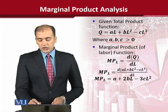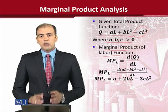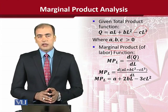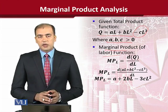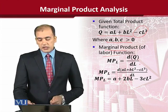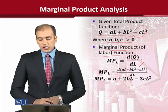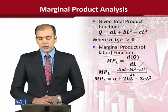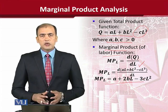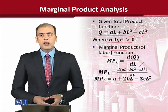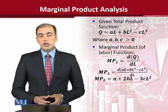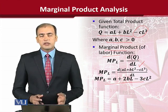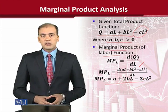If we want to calculate the marginal product of labor, then we will do the differentiation with respect to labor, and that will be the marginal product of labor. We have used the standard differentiation rules here. The result is not in numerical form, rather it appears with alphabets that are the parameters A, B, and C, all of which are positive values.